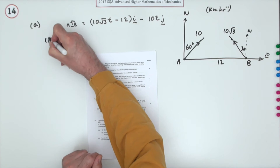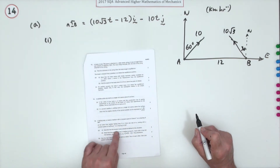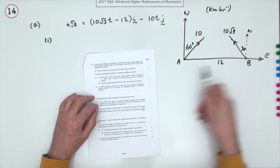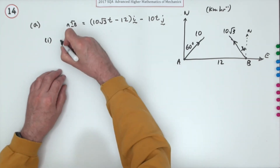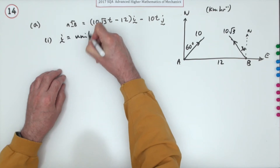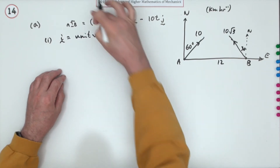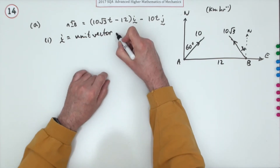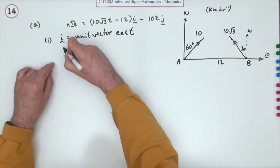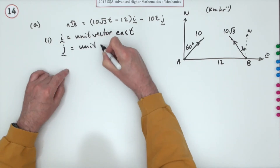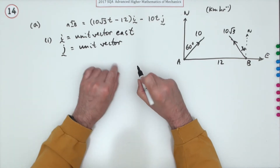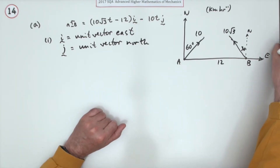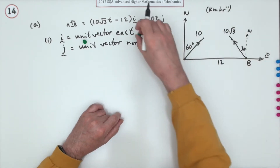First part: describe how the vectors i and j should be defined. Since the problem mentions bearings, we need north, and the boats are positioned due east, so it's going to be north and east. So i is a unit vector in the direction east, and j is a unit vector in the direction north. You get two marks: one for saying they must be unit vectors, and one for specifying east and north.